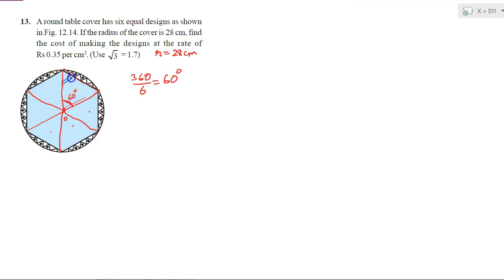So this angle will be equal to this angle, and sum of these two is 120, because this is 60. So if these two sum is 120, then each of them will be 60 degrees each. So if all the three are 60 degrees, then I will get it as equilateral triangle.